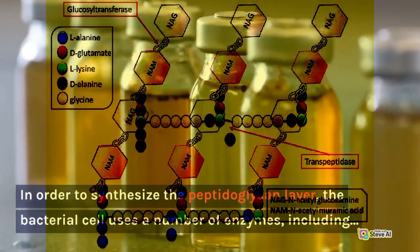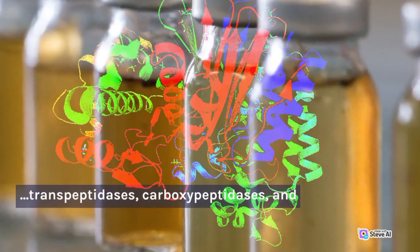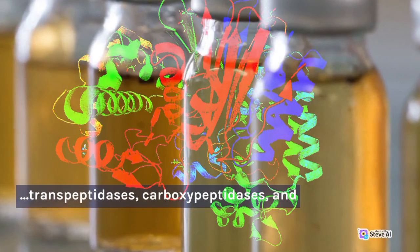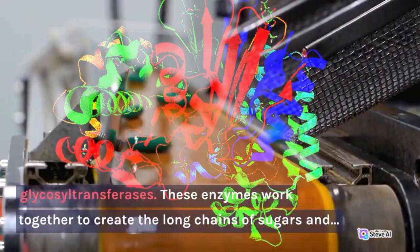In order to synthesize the peptidoglycan layer, the bacterial cell uses a number of enzymes, including transpeptidases, carboxypeptidases, and glycosyl transferases.